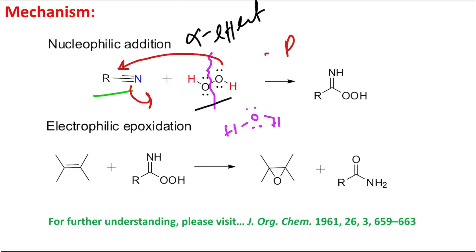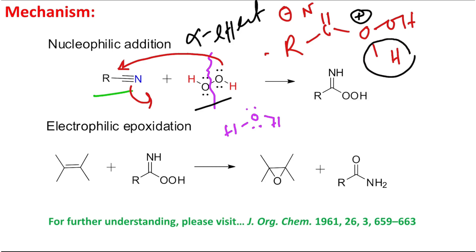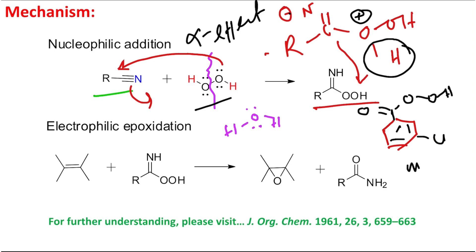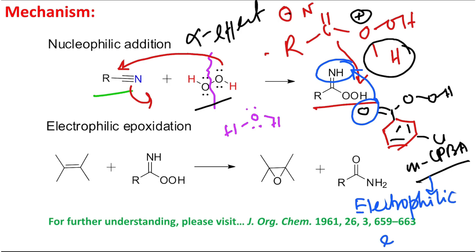Because H₂O₂ is a stronger nucleophile due to the alpha effect, it attacks the nitrile carbon (RCN). In the first step, it produces an intermediate R–C(=NH)–O–OH with a formal positive charge on oxygen. That oxygen releases a proton which is abstracted by nitrogen, producing the key peroxo intermediate. You can compare this intermediate to a peracid — more specifically, meta-chloroperoxybenzoic acid (MCPBA) — a famous reagent for epoxidation of alkenes.